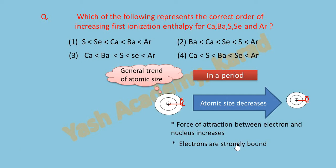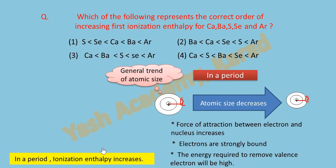These valence electrons are strongly bound by the nucleus. So the energy required to remove valence electron will be high. So we can say that in a period, ionization enthalpy increases.